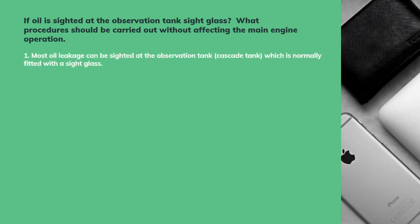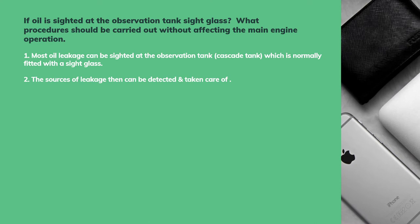Most oil leakage can be sighted at the observation tank, that is the cascade tank, which is normally fitted with a side glass and also has an oil observation alarm. It can sometimes give a false alarm. The source of leakage can be detected and taken care of.